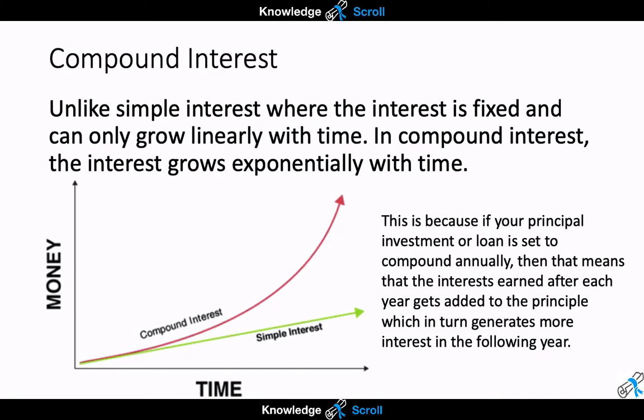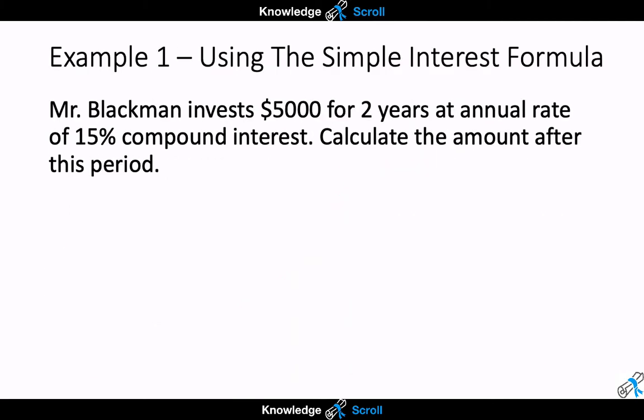This is because when you make your principal investment or loan and it is set to compound annually, the interest earned after each year gets added to the principal, which in turn generates more interest for the following year. You'll see an example of that now.